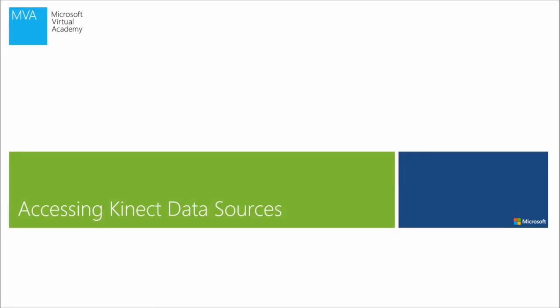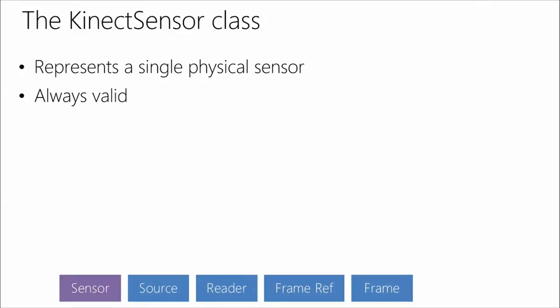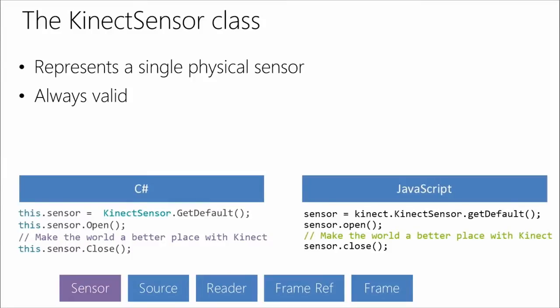The KinectSensor class represents a single physical sensor and is always valid. You call KinectSensor.GetDefault to get the default sensor on the system — we currently only support one sensor per machine. You open the sensor and away you go. Calling Close turns off data streams and stops using CPU and GPU resources in the runtime. You can open it again when needed; you don't have to get a new sensor object. You can set up your events and pollers, then turn the sensor on and off as necessary without losing any state.